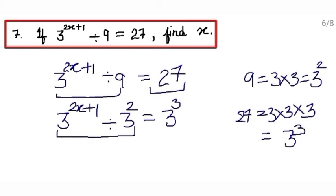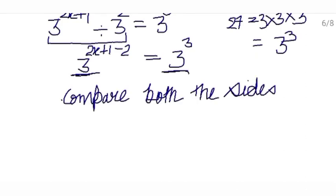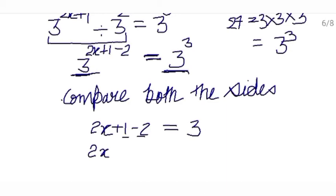Now on the left hand side bases are same, so write it once and since we are dividing them, powers will be subtracted: 2x plus 1 minus 2, equals 3 raised to the power 3. Now on both sides bases are same, so compare both sides — bases are same and equal sign is given, meaning powers should be same. So keep them equal: 2x plus 1 minus 2 equals 3. Solve it: 2x plus 1 minus 2 — both have different signs so values will be subtracted — equals 3.